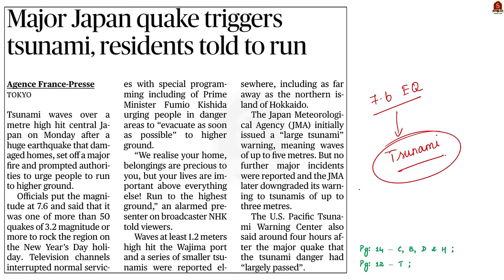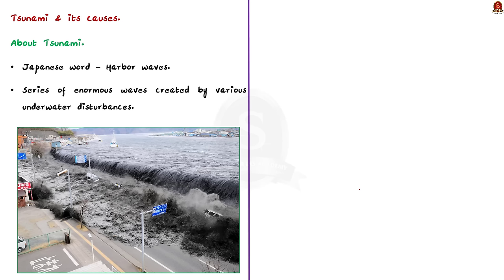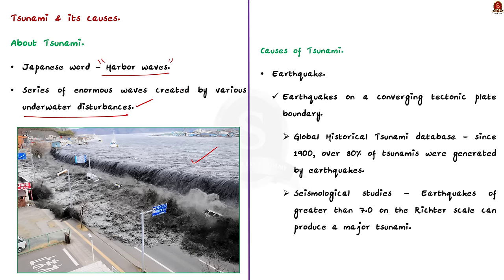The word tsunami is a Japanese word which means harbor waves. It looks like a wall of water and can attack the shoreline, creating havoc and destruction on a large scale. It is a series of enormous waves created by various underwater disturbances. An important cause of tsunami is earthquake. Most tsunamis are caused by earthquakes on a converging tectonic plate boundary. Over 80% of tsunamis were generated by earthquakes.